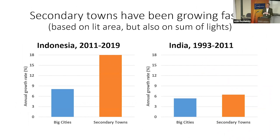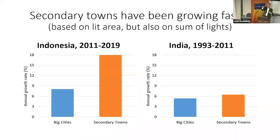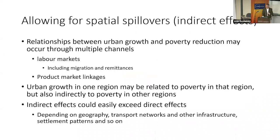When we do the same exercise in both India and Indonesia, we find secondary towns are growing fastest — both in terms of lit area and in lit area times brightness, what we call the sum of lights. Whichever way we measure them, they're growing fastest, especially so in Indonesia. I should note that Indonesia's urban expansion rate had dramatically slowed after the 1997 Asian crisis, so one should not extrapolate backwards from these rates. But again, in both cases, secondary towns were growing more rapidly.